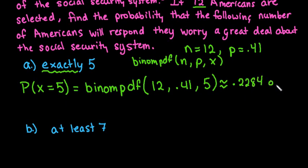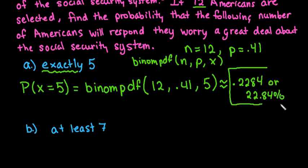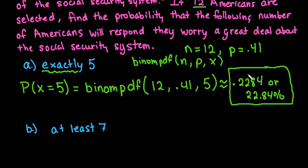You can report this as a decimal or as a percent. To interpret: the probability that exactly five out of 12 people will respond that they worry a great deal about the social security system is approximately 23 percent.